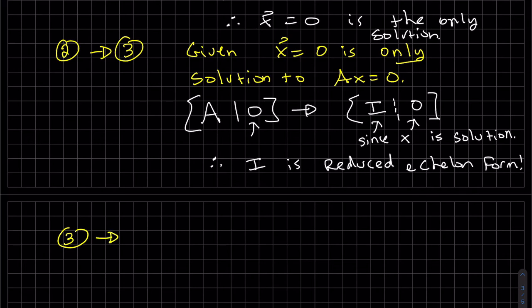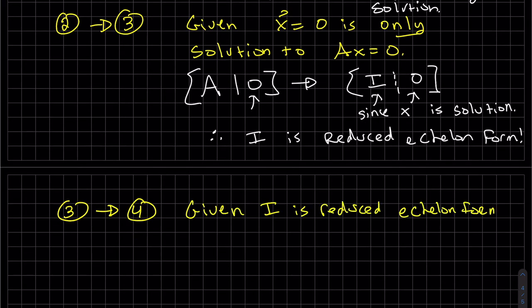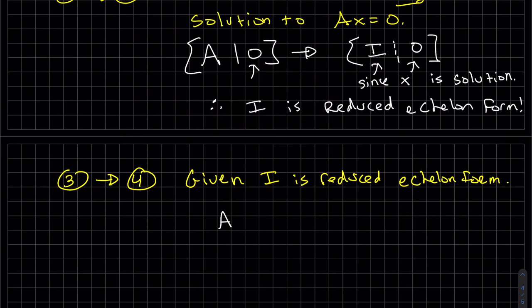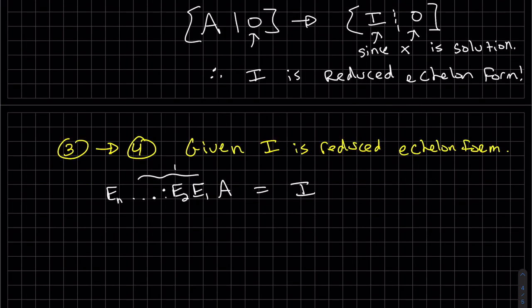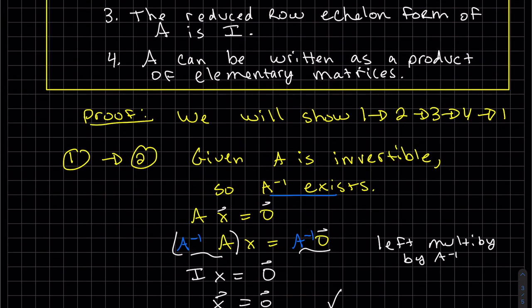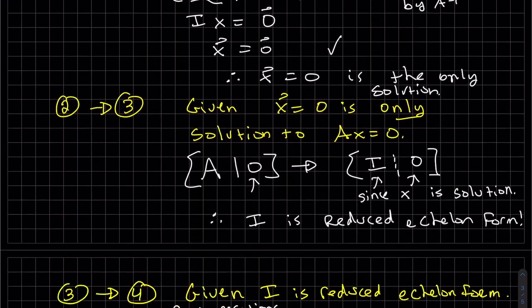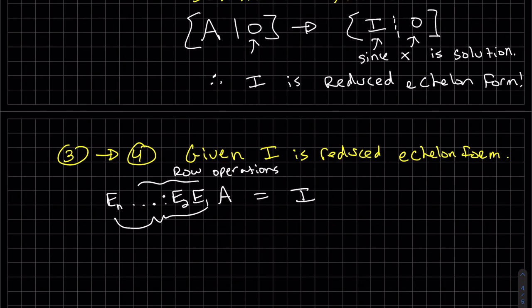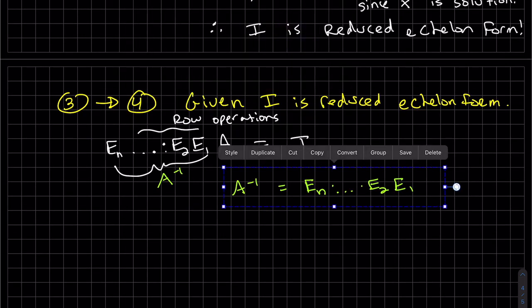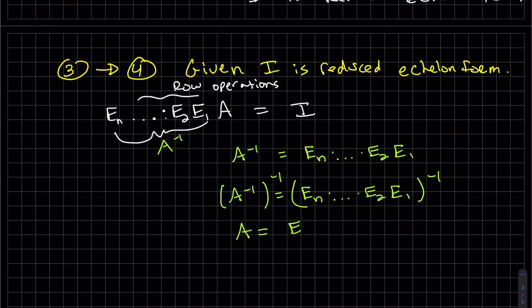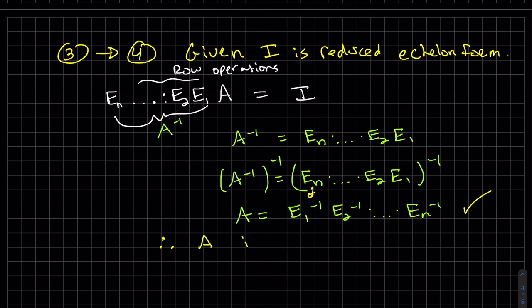So now three implies four. So given, that means we can take A and apply elementary matrices to it, which is just row reducing it. And we should get I. Again, these are row operations, which we convert to elementary matrices. Well, clearly here, what are we trying to prove? A can be written as a product of elementary matrices. This is A inverse. You've already seen this argument. So A, we know each of those elementary matrices, the inverse is an elementary matrix. So therefore, we've proved it. Therefore, A can be written.